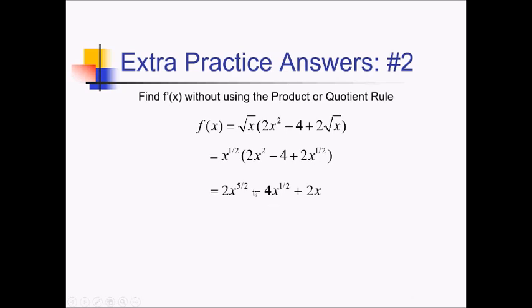Going through and actually using the power rule now, for this first one we've got 2 times 5 halves, which is just 5, x to the 3 halves. Next, 1 half of 4 is 2, so this is minus 2x to the negative 1 half. And then finally, this plus 2x just becomes plus 2.